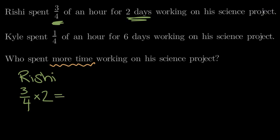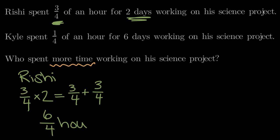Another way we could say this is he spent three-fourths of an hour once, plus on a second day he spent another three-fourths of an hour. So three-fourths plus another three-fourths gives us a total of six-fourths, or six quarter-hours, that Rishi spent on his science project.